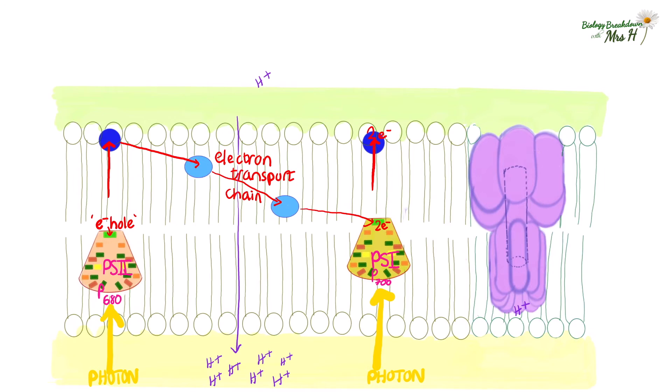So now we have created a proton gradient and the protons diffuse through the enzyme ATP synthase. As they do so ADP and inorganic phosphate join to make ATP.